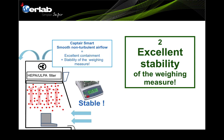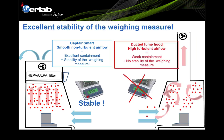Let's go into issue number two: excellent stability. The CaptureSmart filtered fume hood is the best solution for weighing applications — it can be used with balances up to 6 decimal places, which is very sensitive, up to 0.001 microgram measurement accuracy. It provides excellent containment and stability during measurements. Compared with ducted fume hoods with high turbulence airflow, containment is weaker — the higher the turbulence, the greater the tendency to leak from the hood. Additionally, high airflow creates fluctuations that interfere with measurements.